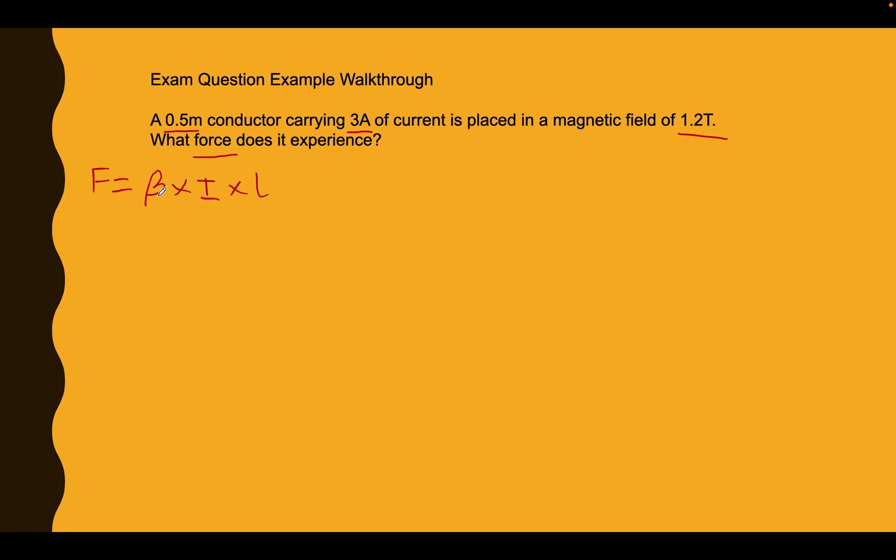Okay, so let's check these values then. Flux density, yep, we've got that 1.2 tesla, that's in its base value for flux density and that's perfect. 3 amps, amps is the base unit for current, so we're happy with that. 0.5 metres, metres is the base unit for length, so we can use that.